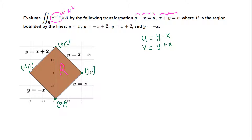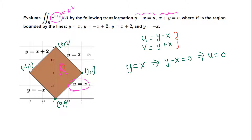First, let's work with the line equations. The line y equals x is the same as y minus x equals 0, which is u equals 0. Next, y equals x plus 2 gives us y minus x equals 2, which means u equals 2.